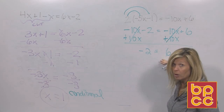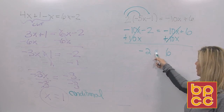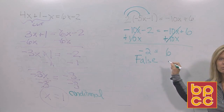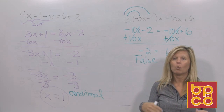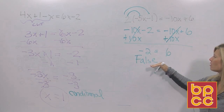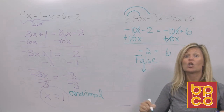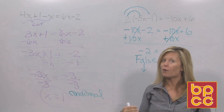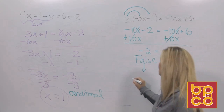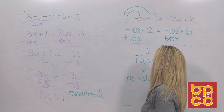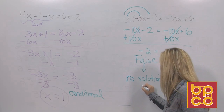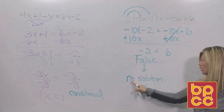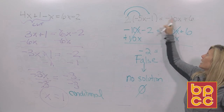Like Little Bo Peep lost her sheep, if you lose your variable, you're going to end up with either a true or false statement. Is negative two equal to six? No — that's false. This is important: that's not the answer. When you're solving equations, if you lose your variable and get a false statement, that means there is no answer — there is no number you could put in for x on both sides that will make it balance. There is no solution. The symbol for no solution is the zero with a slash — that's not the number zero, it's a symbol for the phrase 'no solution,' and you only use it when you cannot solve an equation.